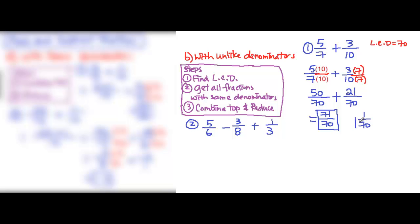The second example here, we have 3 fractions: 5/6 minus 3/8 plus 1/3. Again, they don't have the same denominator. First of all, we need to find the LCD. So this one is harder to see what is the LCD, the lowest common denominator. I'm going to try to list this out, list out all the multiples.